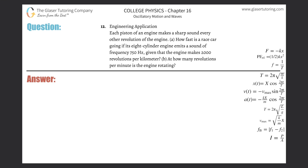Engineering application number 12: each piston of an engine makes a sharp sound every other revolution. How fast is a race car going if its eight-cylinder engine emits a sound of frequency 750 hertz, given that the engine makes 2,000 revolutions per kilometer?